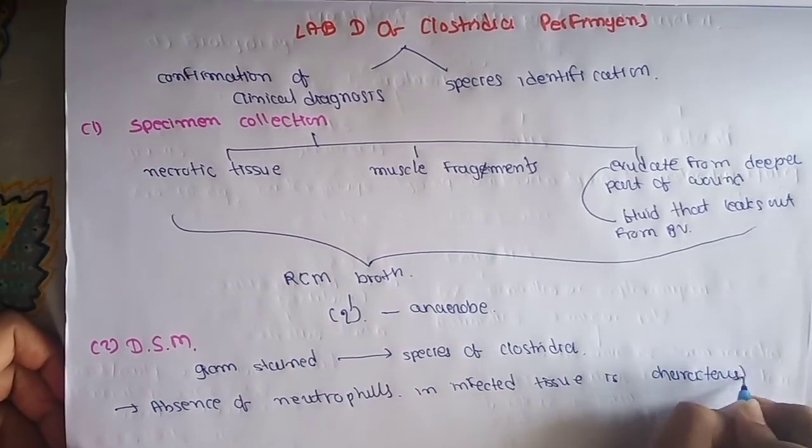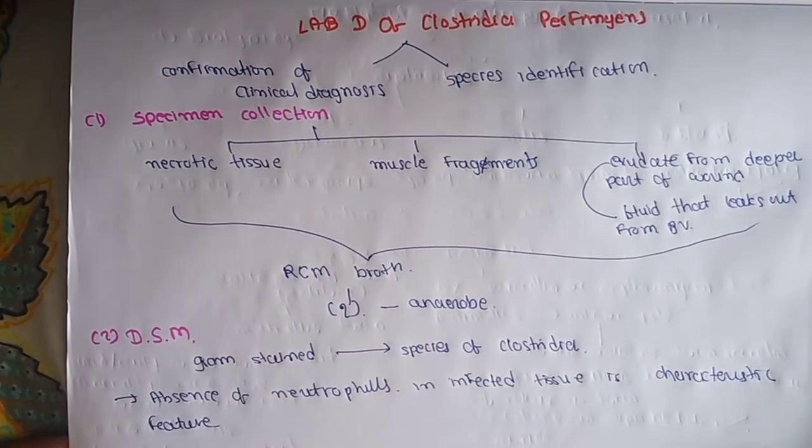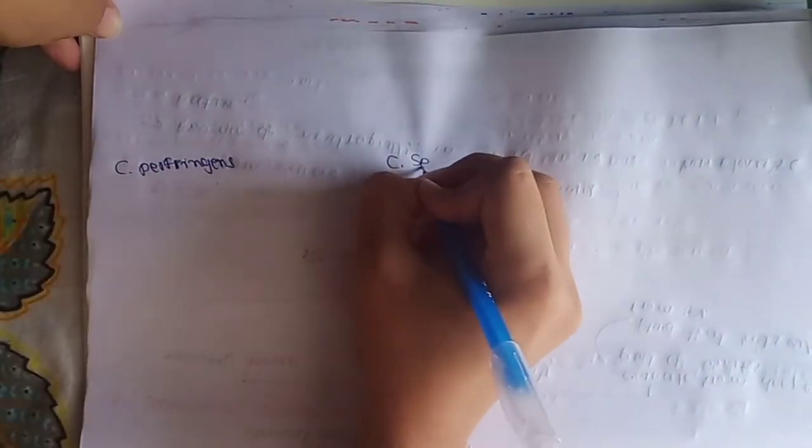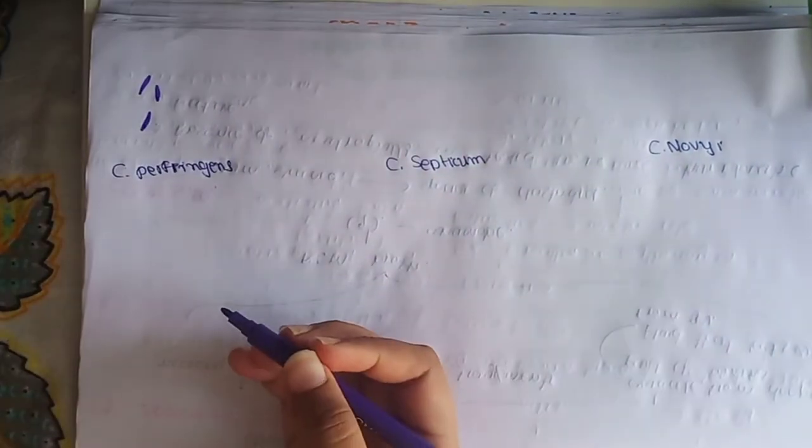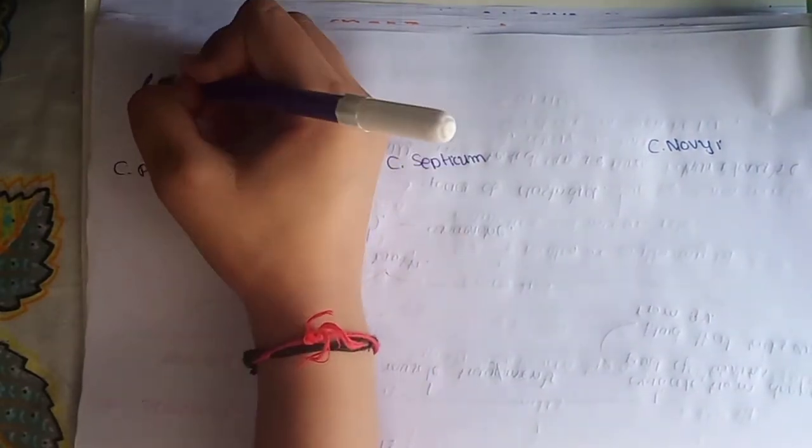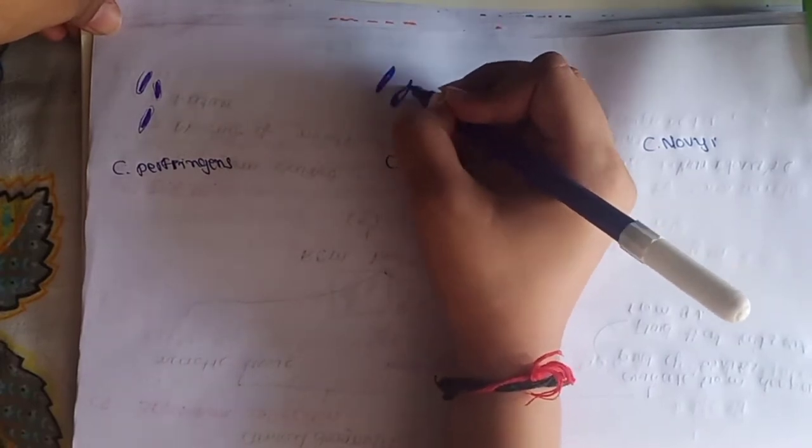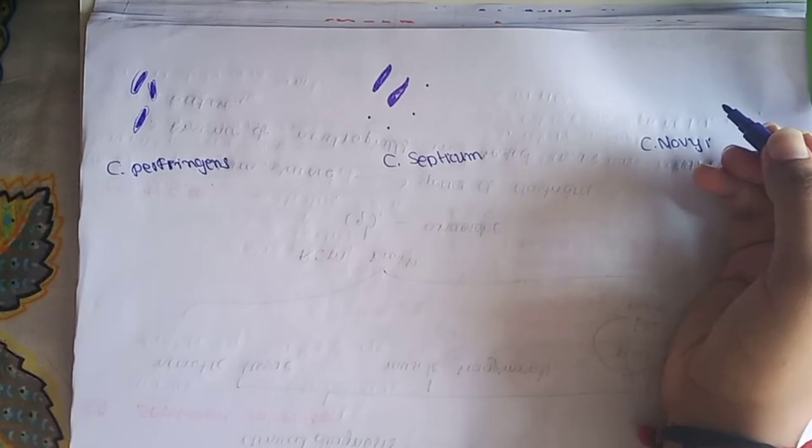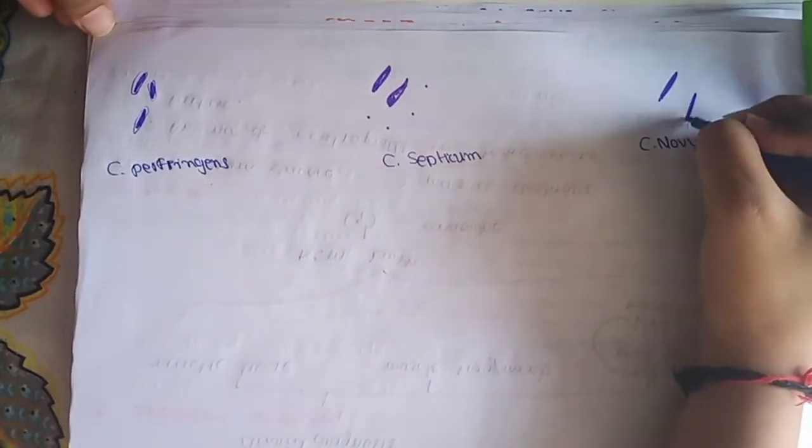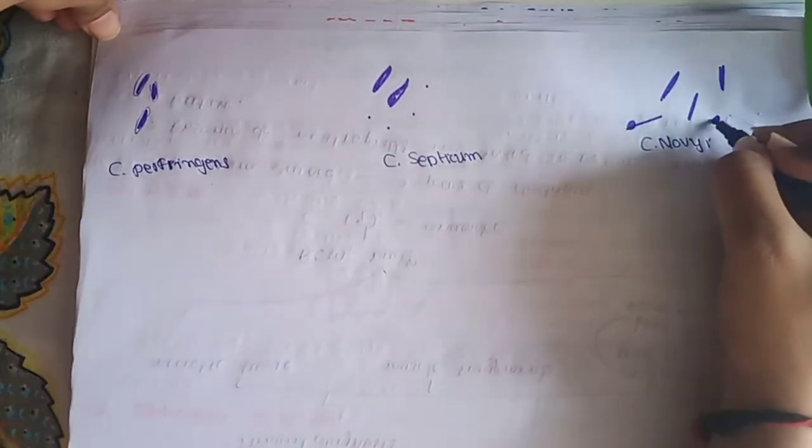The absence of neutrophils in infected tissue is the characteristic feature in gas gangrene direct smear microscopy. We will see Clostridium perfringens, Clostridium septicum, and Clostridium novyi. Clostridium perfringens will look like thick stubby gram-positive bacilli without spore formation. C. septicum will look like citron body, leaf-shaped, irregularly stained with spores. And C. novyi are large rods with sub-terminal spores. Clostridium perfringens don't give spores because they are in their favorable condition.